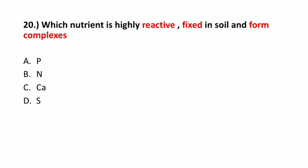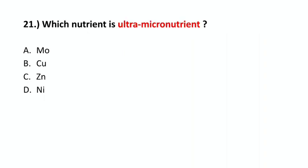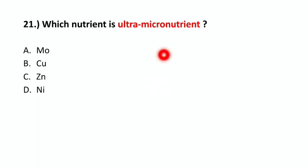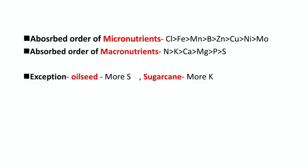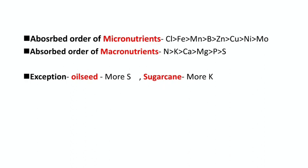The correct option is option A – Phosphorus. Also, only one nutrient is considered an ultra micronutrient.